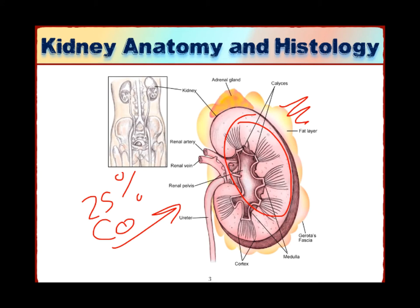About 25% of the cardiac output goes to the kidneys. The major function of the kidneys is glomerular filtration, and for that the kidneys need arterial blood coming from the heart to go through the artery system throughout the whole kidneys. This blood should be at a specific volume and specific pressure in order for the nephrons to perform their function. The nephrons are the functional units of the kidneys.